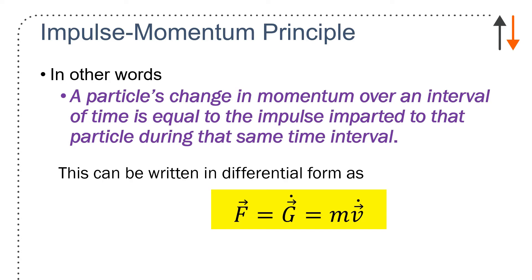And we can write that as force equals G dot, which is the linear momentum, time rate of change in linear momentum, which equals MV dot, which is MA.